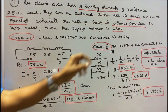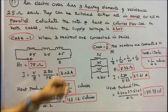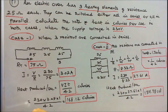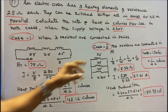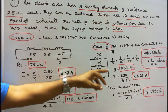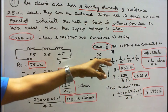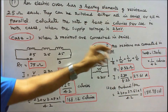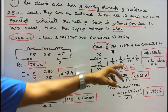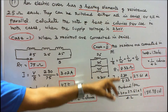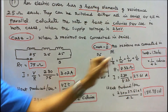Case 2: The resistors are connected in parallel. When the 3 heating elements are connected in parallel, the equivalent resistance is 8.33 ohms — from 1/25 + 1/25 + 1/25. Therefore R = 8.33 ohms, and I = V/R = 230 divided by 8.33 = 27.61 amps.